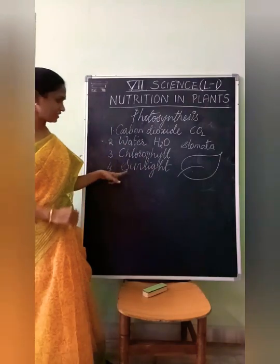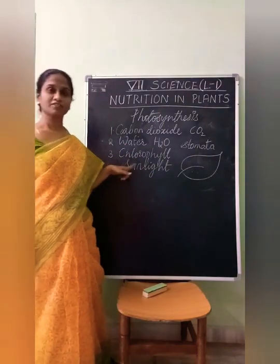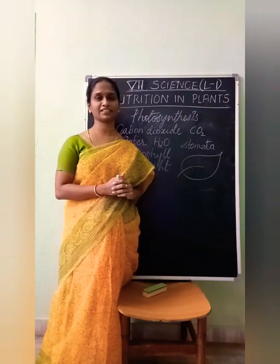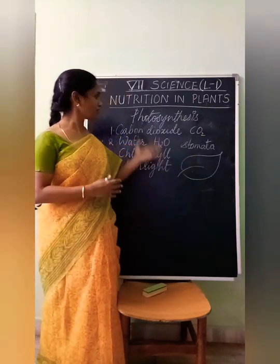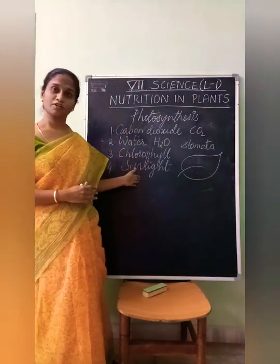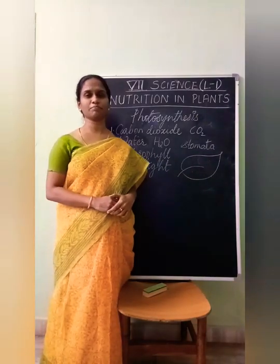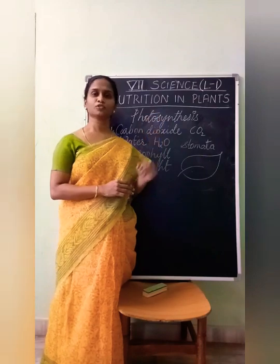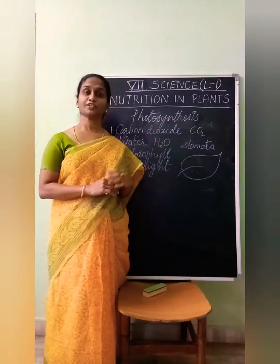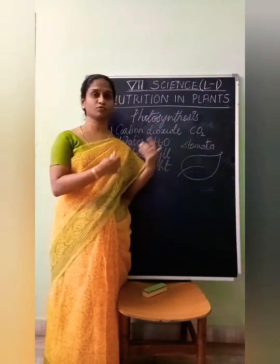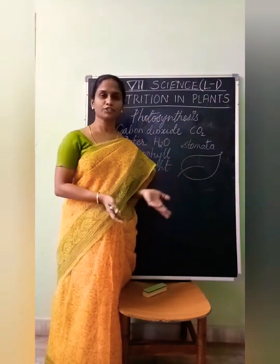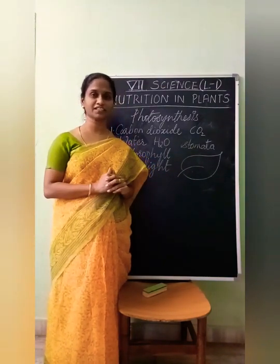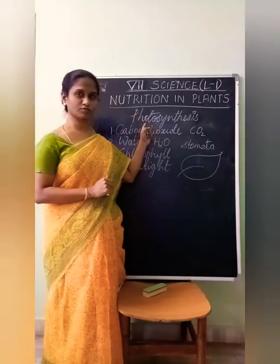The last requirement is sunlight, which is very essential for photosynthesis. Apart from these four things, you also need a suitable temperature for the process of photosynthesis — it should be neither too hot nor too cold. An optimum temperature is required for photosynthesis.